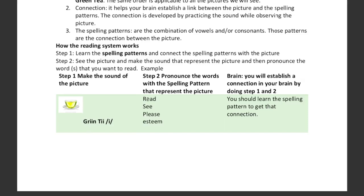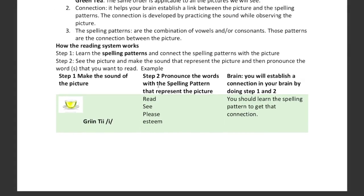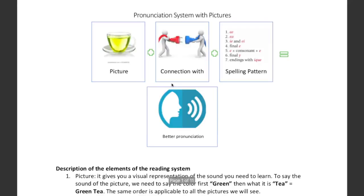With this exercise of pronouncing the picture T-E plus the different words that contain the spelling patterns representing the picture, students are going to be able to establish a connection. This is how the system works — students need to pronounce the picture and then establish a connection between the patterns and the pictures. This is the introduction of how the system is used to teach pronunciation using pictures.